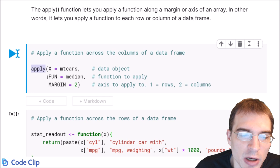And for the second argument, fun, you pass in the function you want to apply across the margin you select. So in this case, we're just going to get the median.